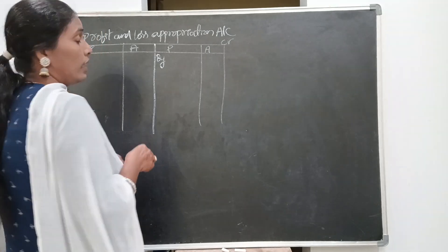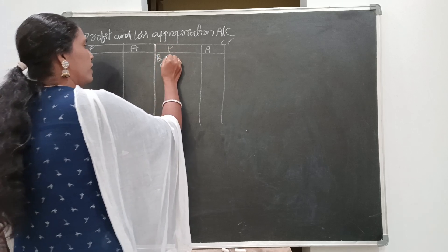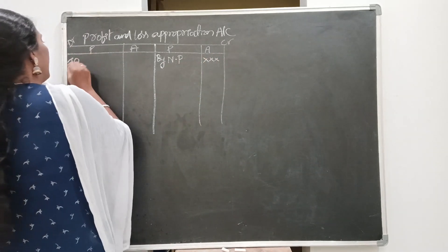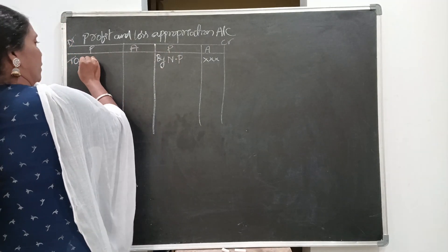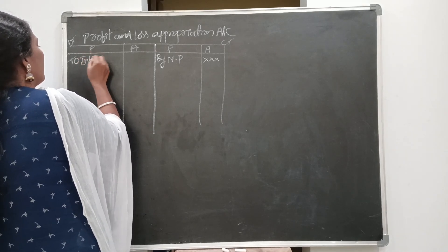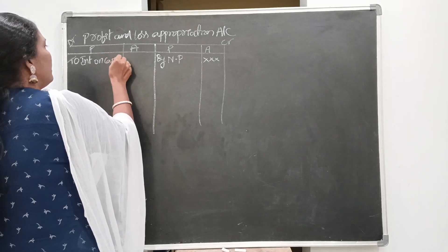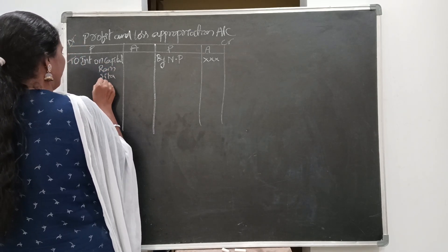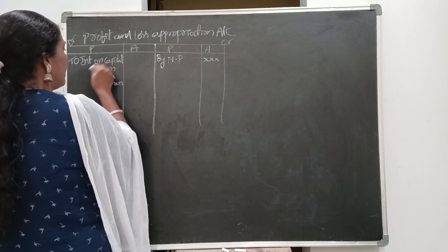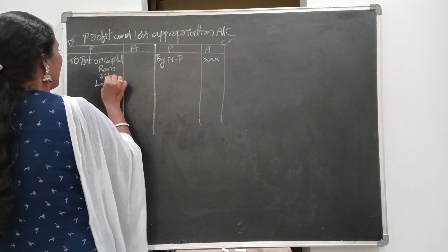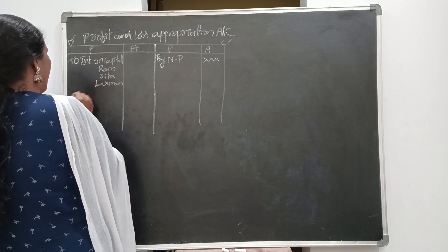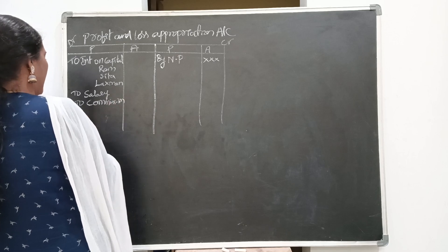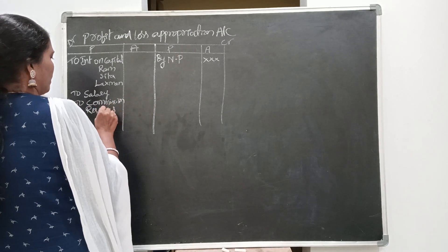The P&L appropriation account is an extension of the P&L account. From the previous class, we discussed net profit. This account is debited with interest on capital — for example, if Ram, Sita, and Lakshman are three partners, interest on capital is provided to these three partners, along with salary, commission, and reserves on the debit side.